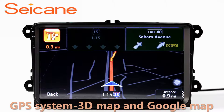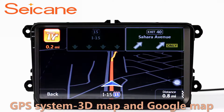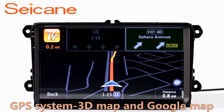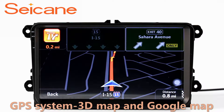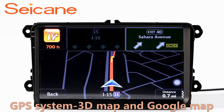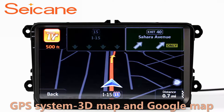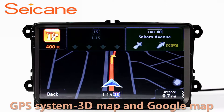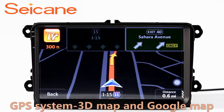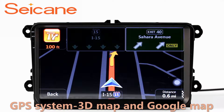GPS. Go to the main menu and open GPS System. The 3D navigation map shows you accurate GPS locations and route information. It also supports Google Maps. You will never get lost with this function.